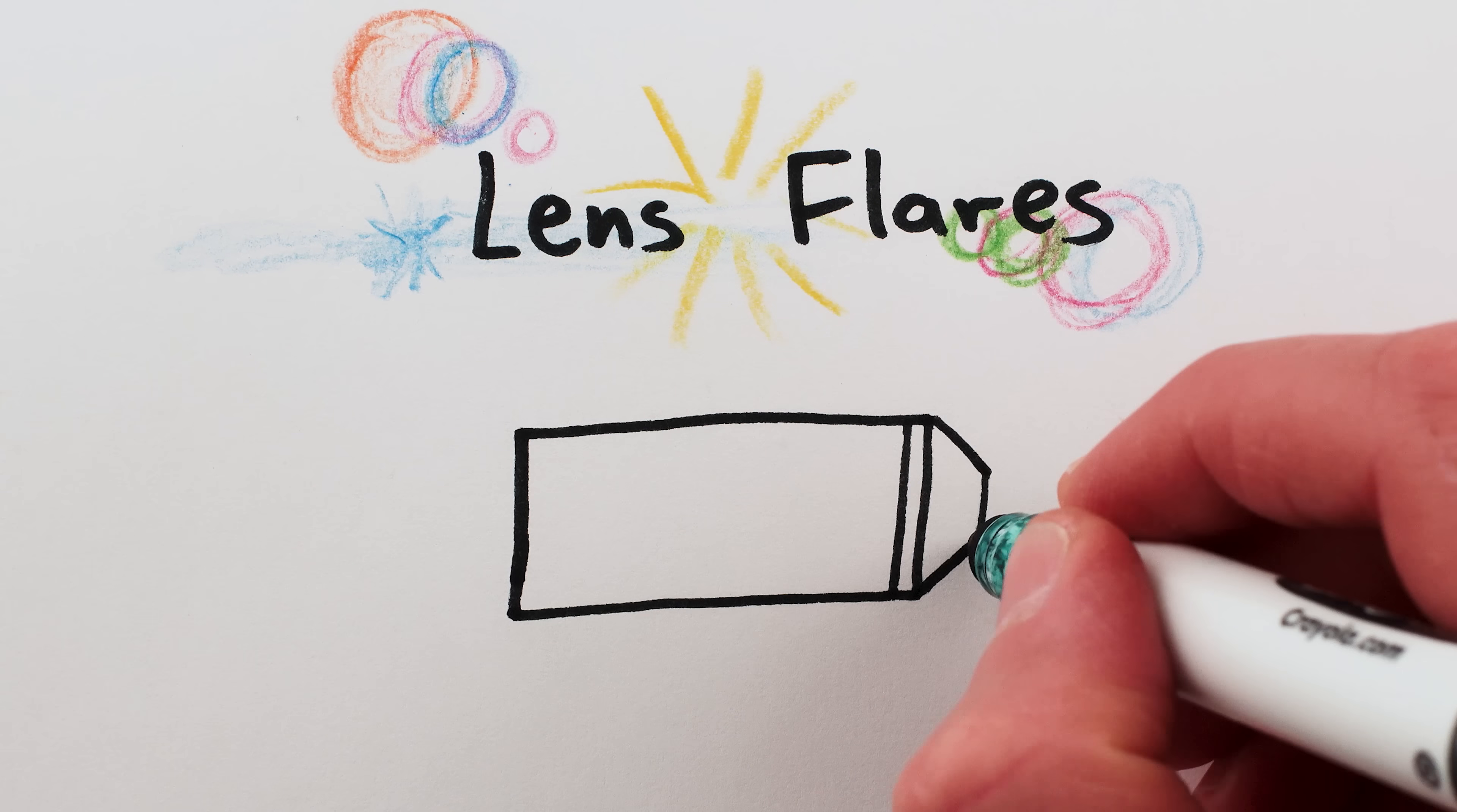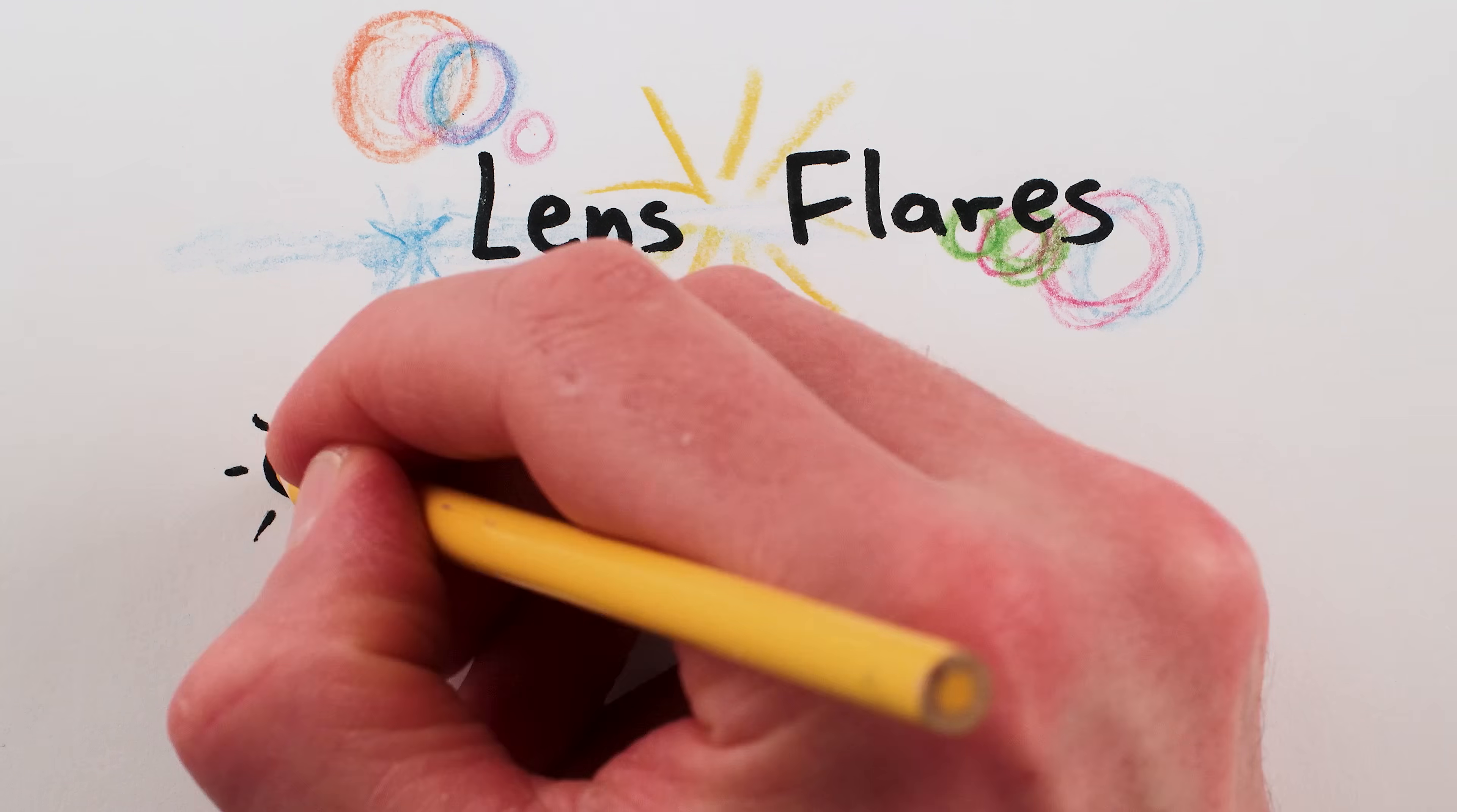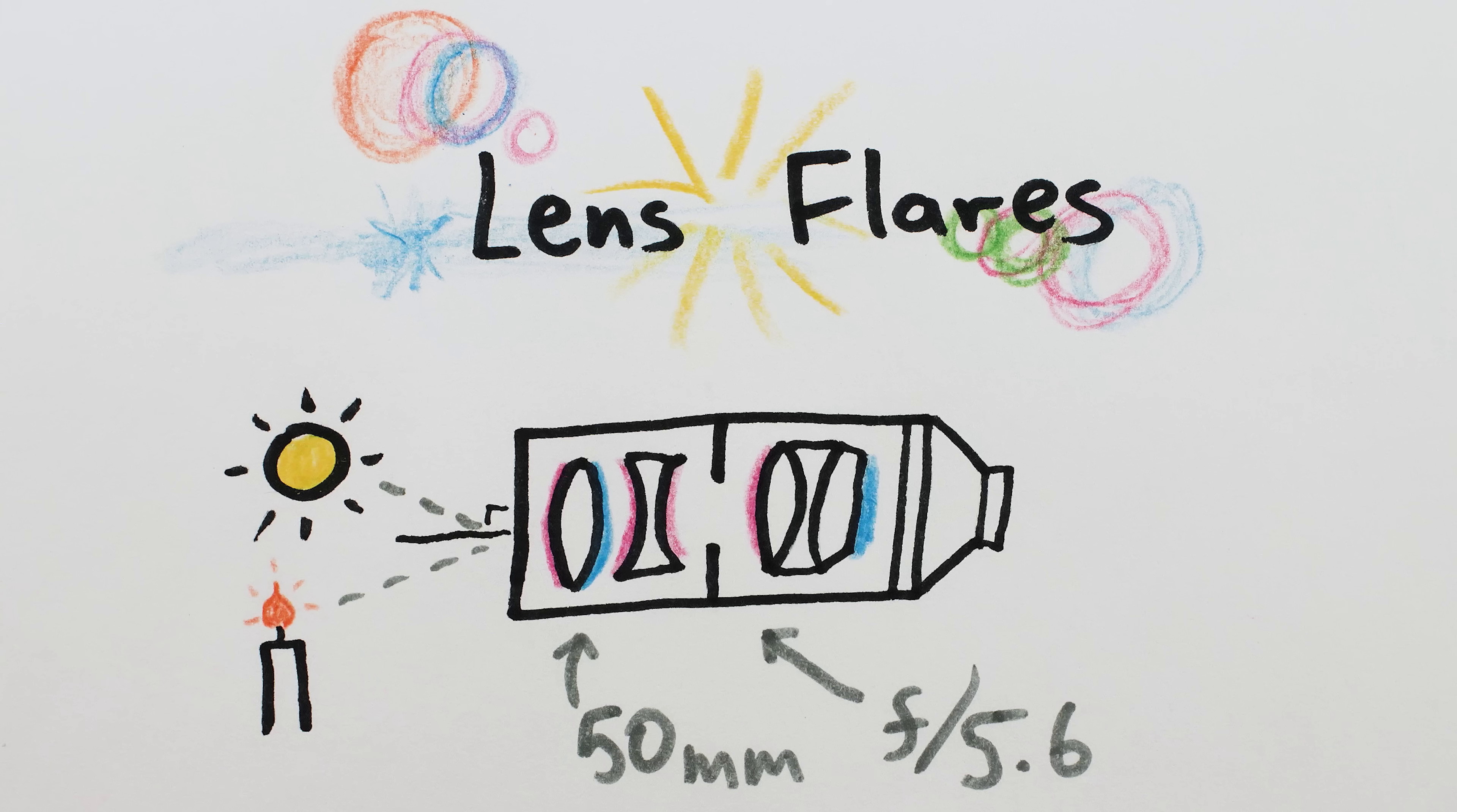The appearance of flares depends on a lot of factors. The shape and positioning of the lens elements, the coatings on them, the focus and zoom and aperture settings, how bright the light is, and even the direction the bright light is coming from.